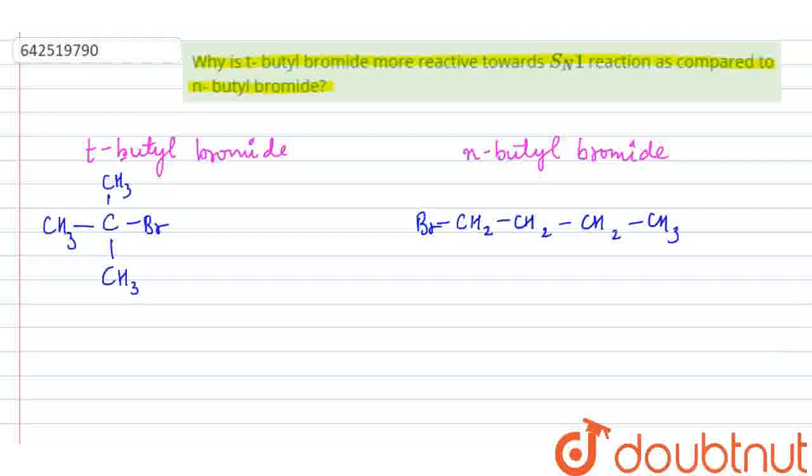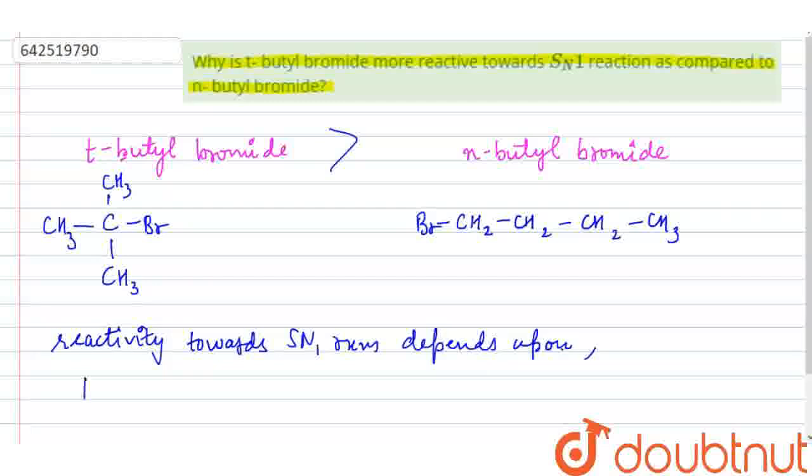So, it is asked here why the tertiary butyl bromide is more reactive towards SN1 reactions. The reactivity towards SN1 reactions depends upon the stability of the carbocation formed.